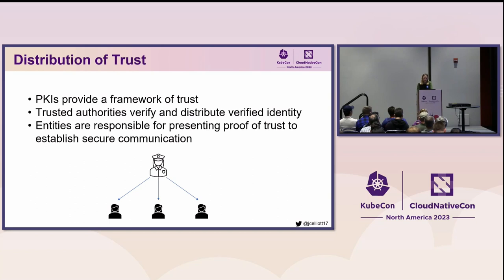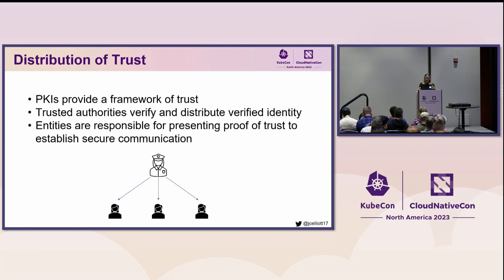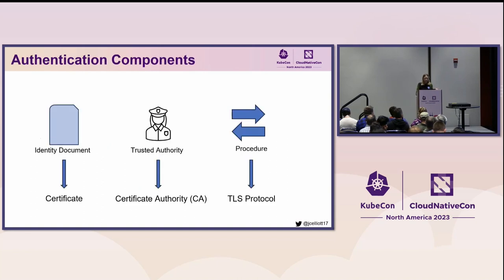PKIs help you achieve authenticated communication by defining a framework of trust. This framework includes trusted authorities that verify and manage the distribution of verified identity documents, or proofs of trust. Entities present these documents when initiating communication to enforce that the public key is their own. There are three components within a PKI that help achieve this: identity documents, trusted authorities, and some procedure or communication protocol.